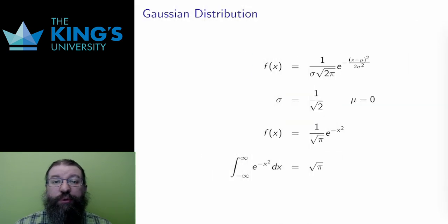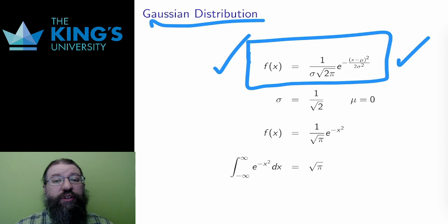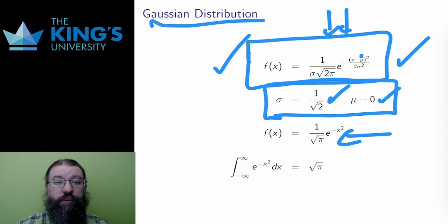The next example is perhaps the most common and most important probability distribution, the Gaussian distribution, otherwise known as the bell curve. The full version is here, with two parameters, sigma and mu. I'm going to talk about those parameters in later videos. For now, let me choose some specific values. I'll choose sigma to be 1 over root 2 and mu to be 0, and this is the resulting function, one particular case of the bell curve. The domain in general is all real numbers.